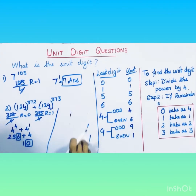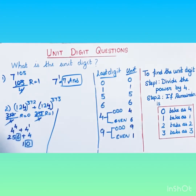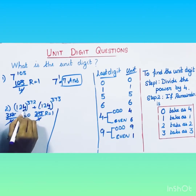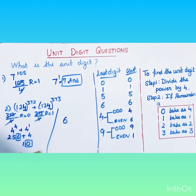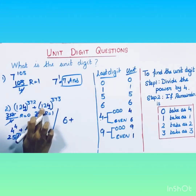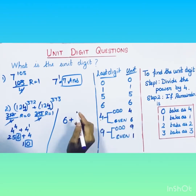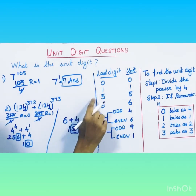You have to remember this table to solve: if the last digit is 0, 1, 5, 6, 4, or 9, you can use this table. Let's solve the same problem using it. The last digit of the base is 4. If the power is even, unit digit is 6; if the power is odd, unit digit is 4. Adding six plus four gives ten, so the unit digit is zero — the same answer.